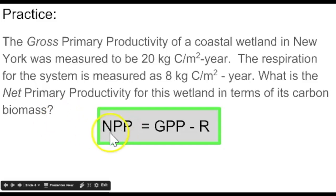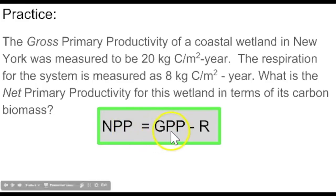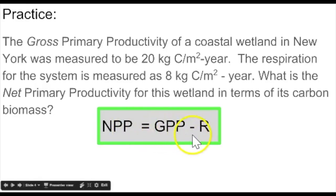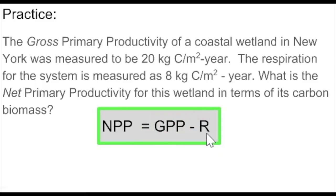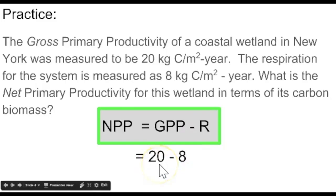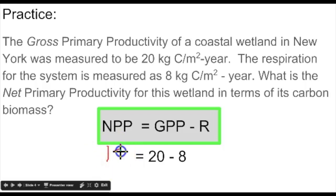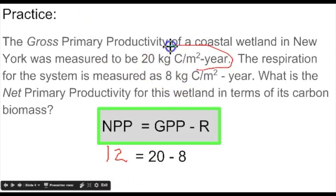Using the equation, net primary productivity equals gross primary productivity minus respiration. Plugging in what you know: 20 is the gross, and 8 is the respiration, giving you 12 kilograms of carbon per meter squared per year. Don't forget to include your units when you report this.